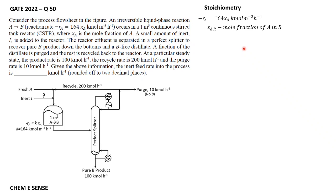This is a stoichiometry-based problem. We balance individual components — A, B, and I — across individual units such as the reactor and splitter, and also the overall process. We need to solve the resulting algebraic equations.